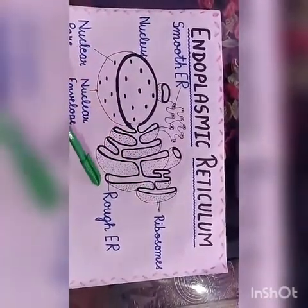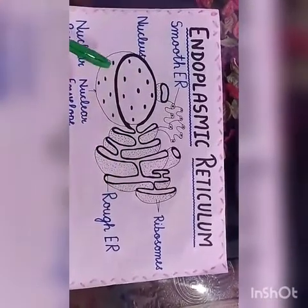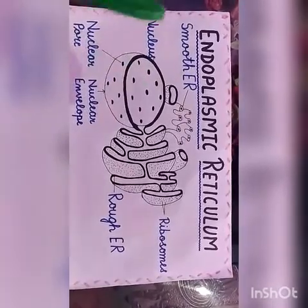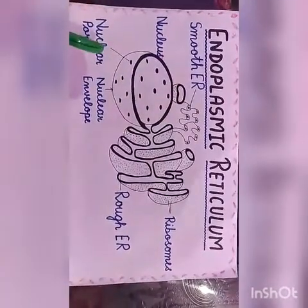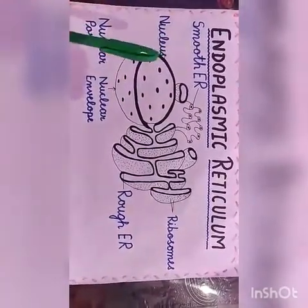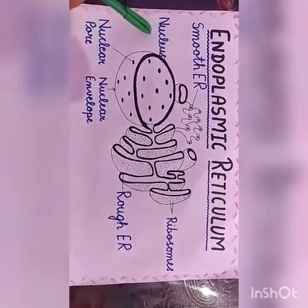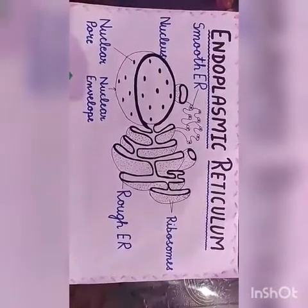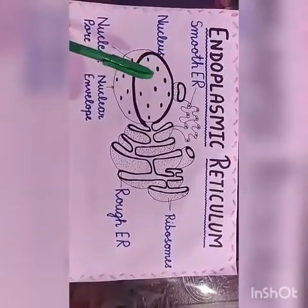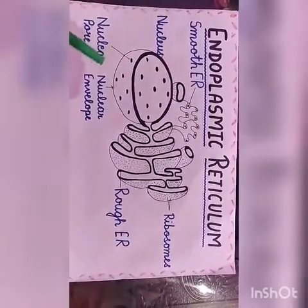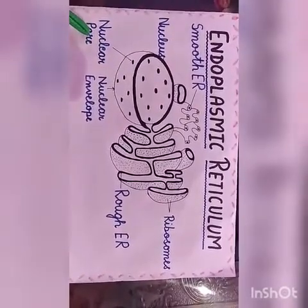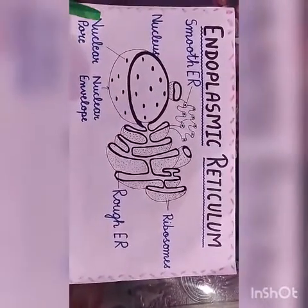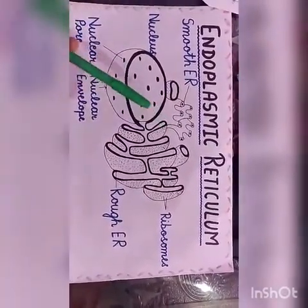The ribosomes on rough ER specialize in the synthesis of proteins. Smooth ER, by contrast, is involved in synthesis of lipids including cholesterol and phospholipids. The function of the nucleus is to act as the cell's brain. The nuclear envelope, a double membrane enclosing the nucleus of eukaryotic cells, controls the flow of information between the nucleoplasm and cytoplasm. Nuclear pores form anchoring sites at the nuclear envelope and are large multi-subunit transport channels that perforate the nuclear membrane.